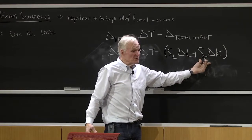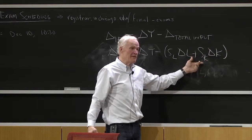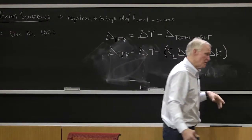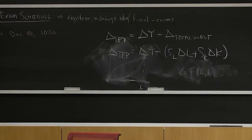Now, if you didn't have constant returns to scale, those two numbers wouldn't add up to one. That's the only difference. With constant returns to scale, they'll add up to one, but this formula would work even without constant returns to scale.